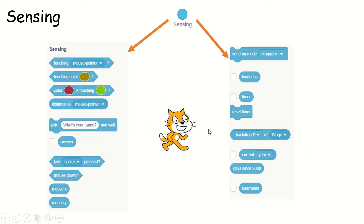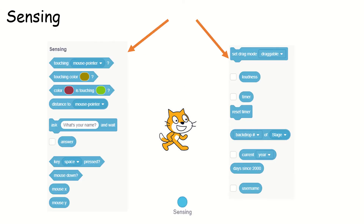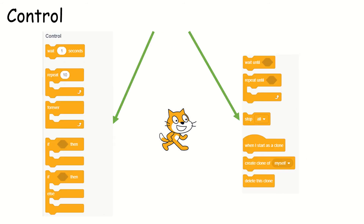Now, what are all the three things we learnt? The first thing is variable — a holder of values you can update any number of times. Second is sensing — I need to get input from the user and sense it using the sensing option. Third, I need to do the operation with the sensed variables using the operators — plus, minus, multiplication, and division.